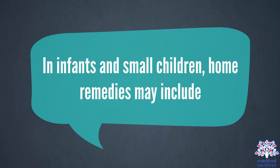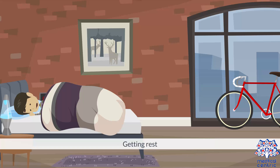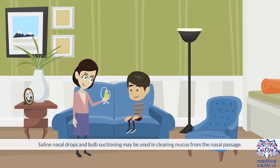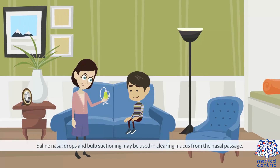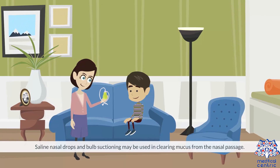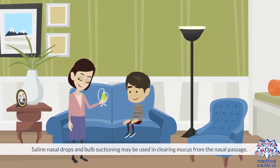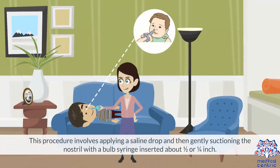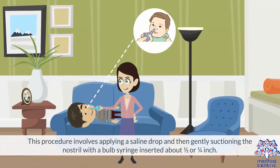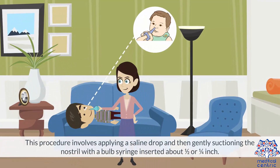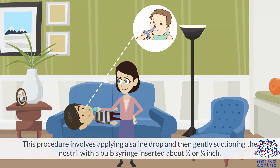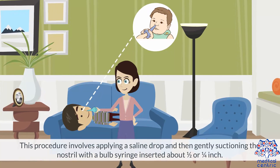In infants and small children, home remedies may include getting rest and taking plenty of fluids. Saline nasal drops and bulb suctioning may be used to clear mucus from the nasal passage. This procedure involves applying saline drops and then gently suctioning the nostril with a bulb syringe inserted about ½ or ¼ inch.